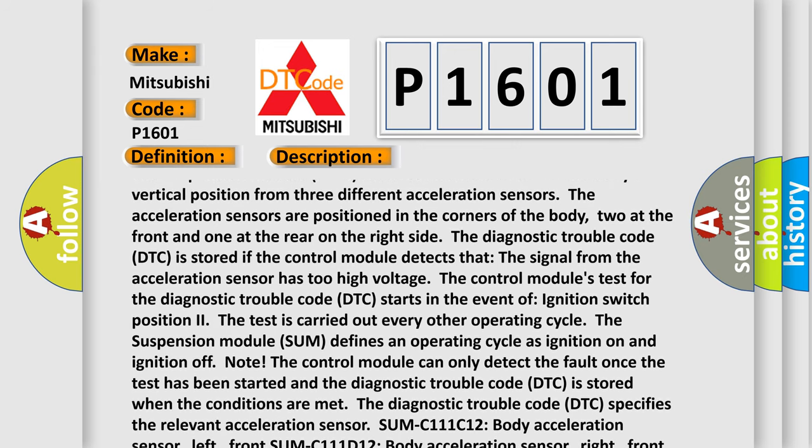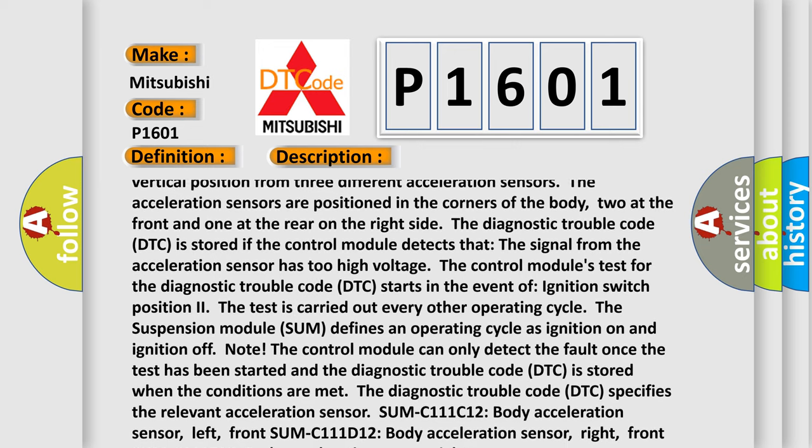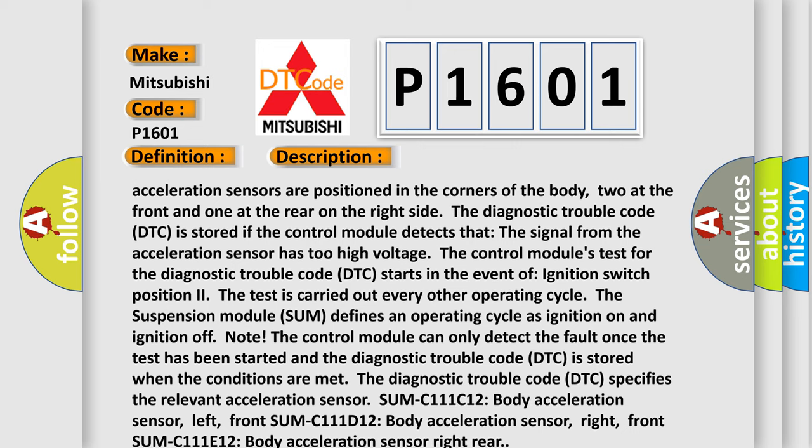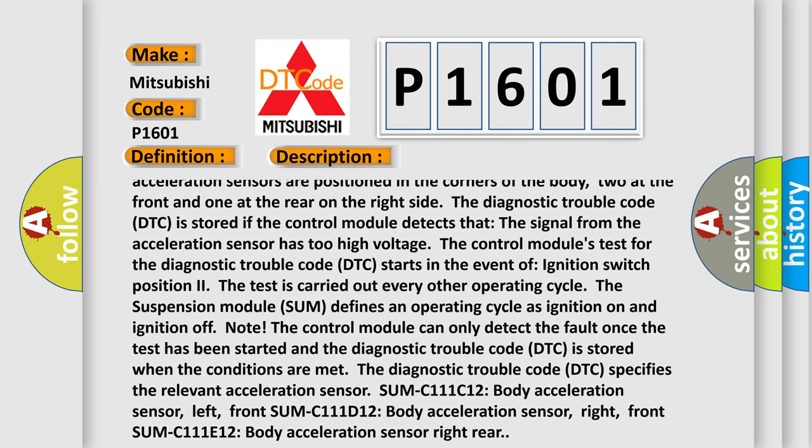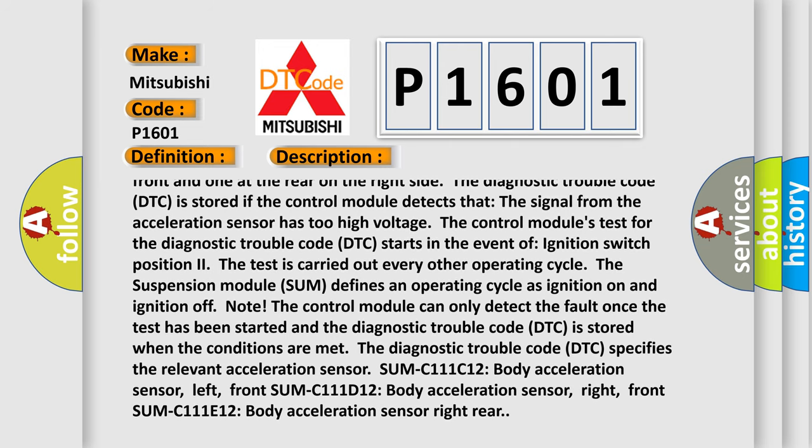The Diagnostic Trouble Code DTC is stored if the control module detects that the signal from the acceleration sensor has too high voltage. The control module's test for the DTC starts in the event of ignition switch position two.